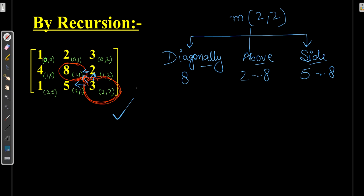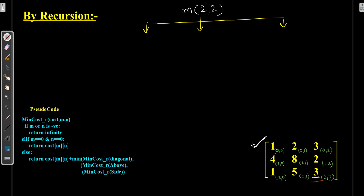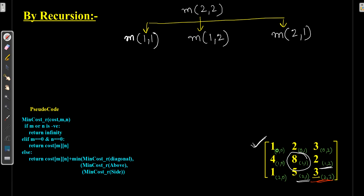Taking the same matrix for M(2,2), it will follow three paths: first diagonally, so diagonal of (2,2) is (1,1); then the above element (1,2); and the side element (2,1). Then we calculate for (1,1). Here also there are 3 paths: diagonal of (1,1) is (0,0), the above element is (0,1), and the side element is (1,0).